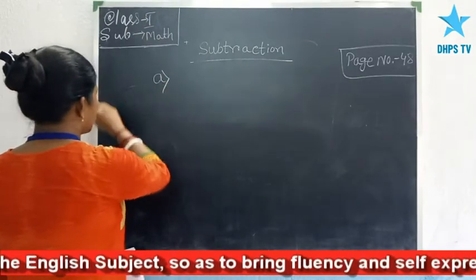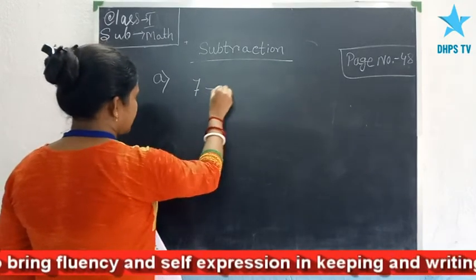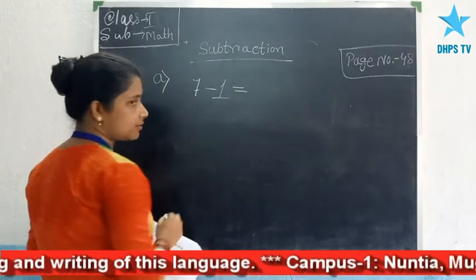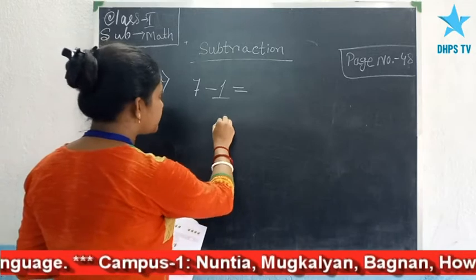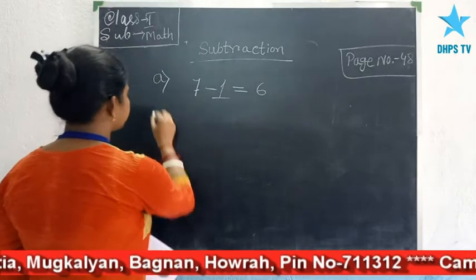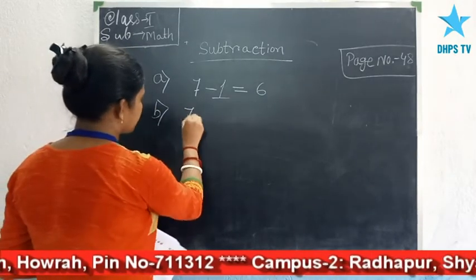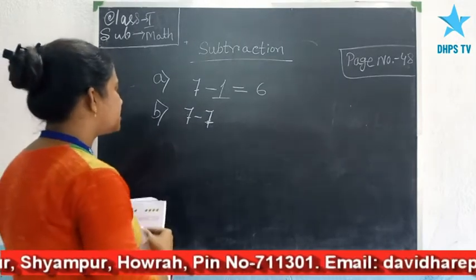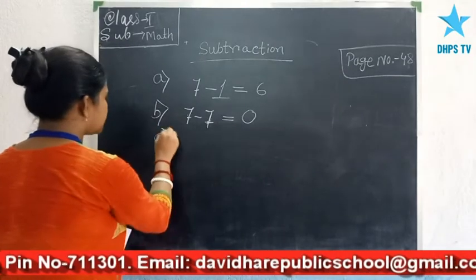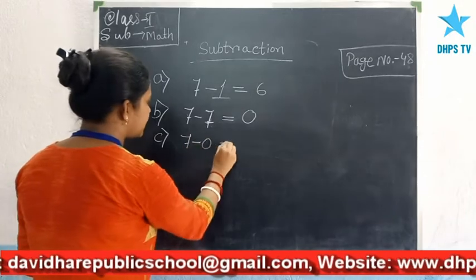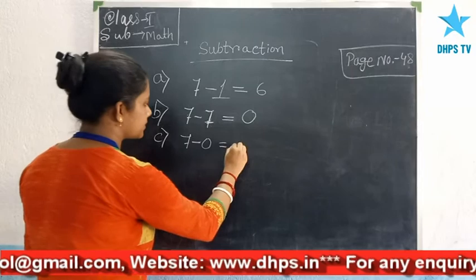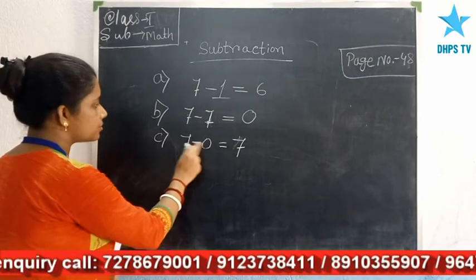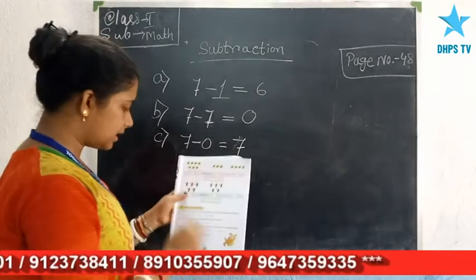For example, take the number 7. When you subtract 1 from 7, you get 6, which is the number just before 7. For fact 2, when you subtract any number from itself, the answer is 0. For fact 3, when you subtract 0 from 7, the answer is 7 itself. These are the 3 subtraction facts.